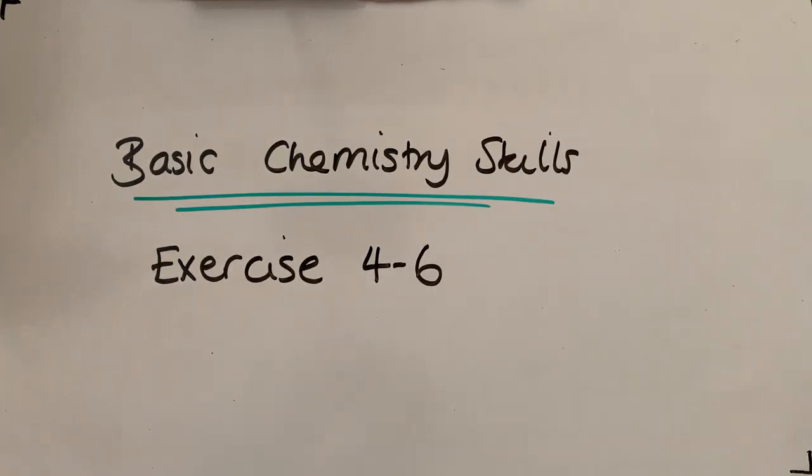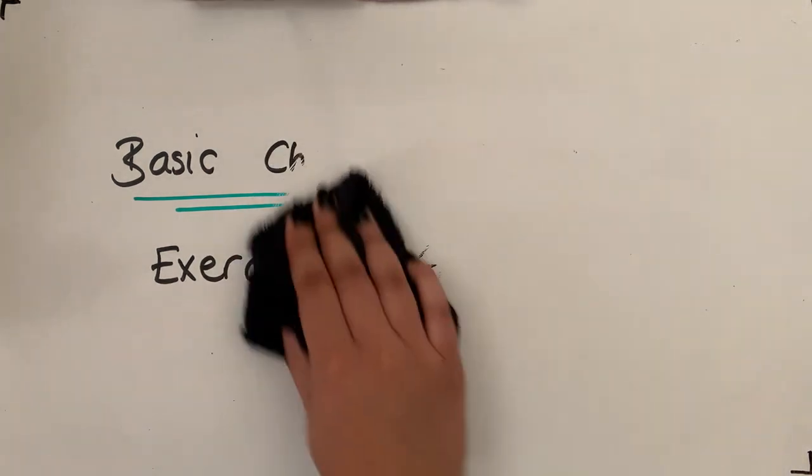We're moving on to exercise 4 to 6 now. Starting with exercise 4, you are converting the word equations into balanced symbol equations. Question number one: zinc metal reacts with copper(II) sulfate solution to produce solid copper metal and zinc sulfate solution.